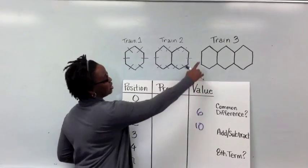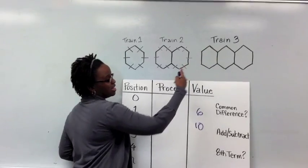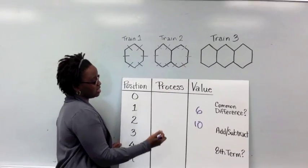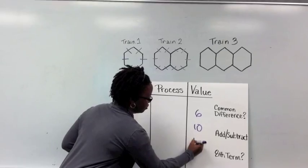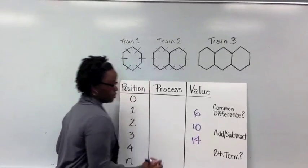And then train 3, if we were to count all the sides and find our perimeter, we have a perimeter of 14.